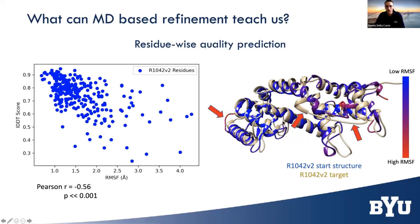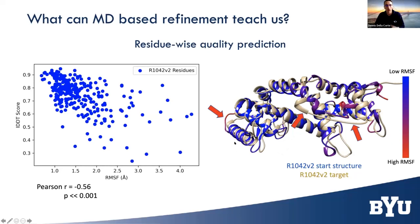When we visualize RMSF on the structure, the start structure is colored between blue and red based on fluctuation amount. The red-shaded residues — those that fluctuate most in the simulation — are also the ones that differ most from the true experimentally solved structure shown in gold. We can use this LDDT measure to understand which parts of our model are probably not as accurate as we would like.